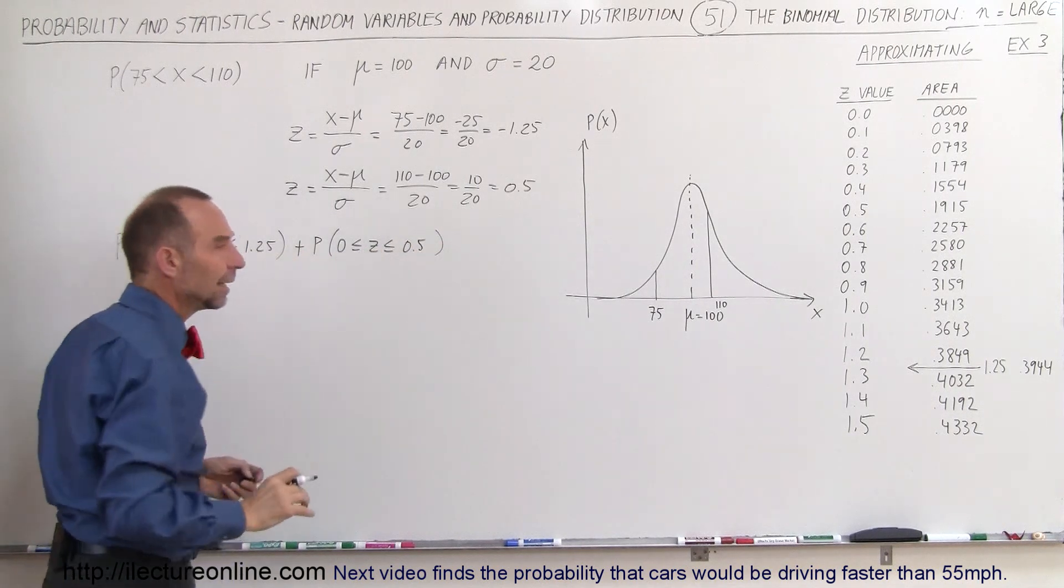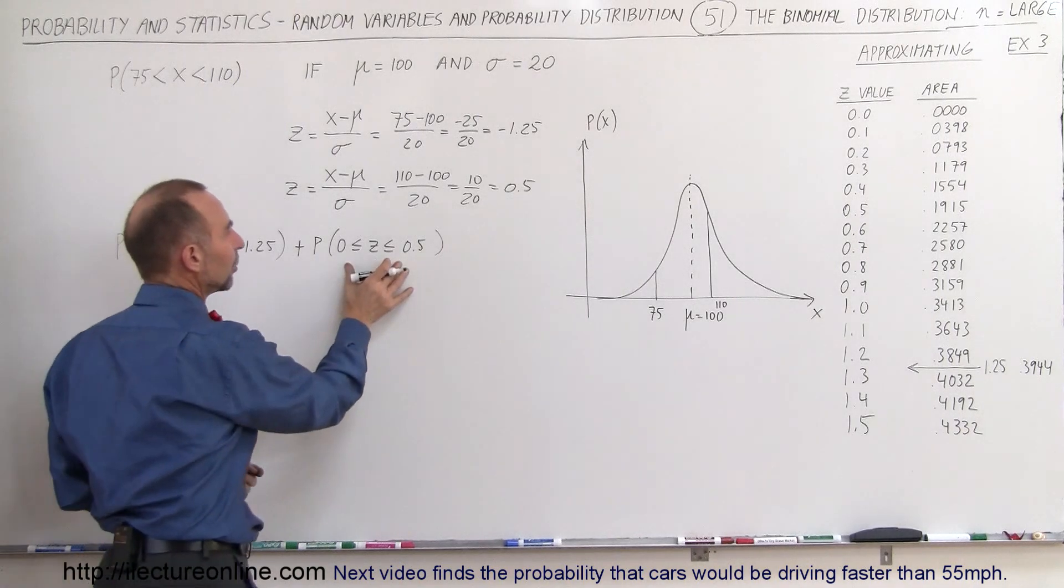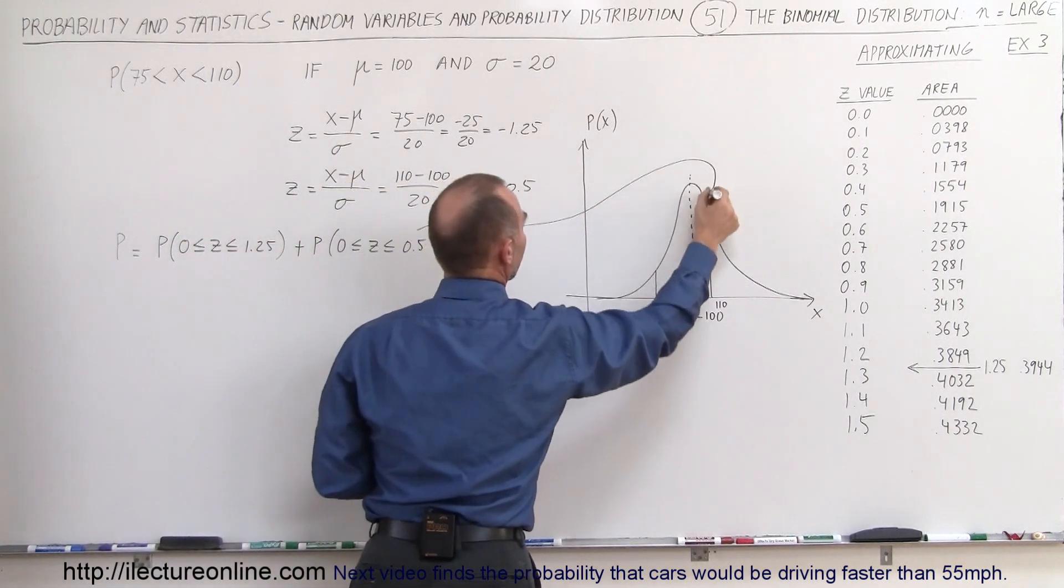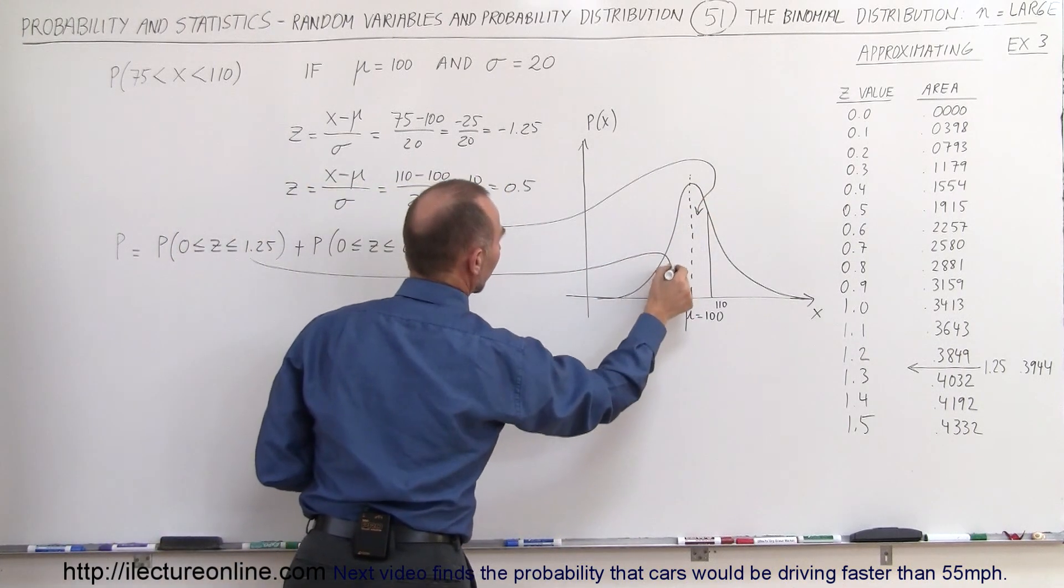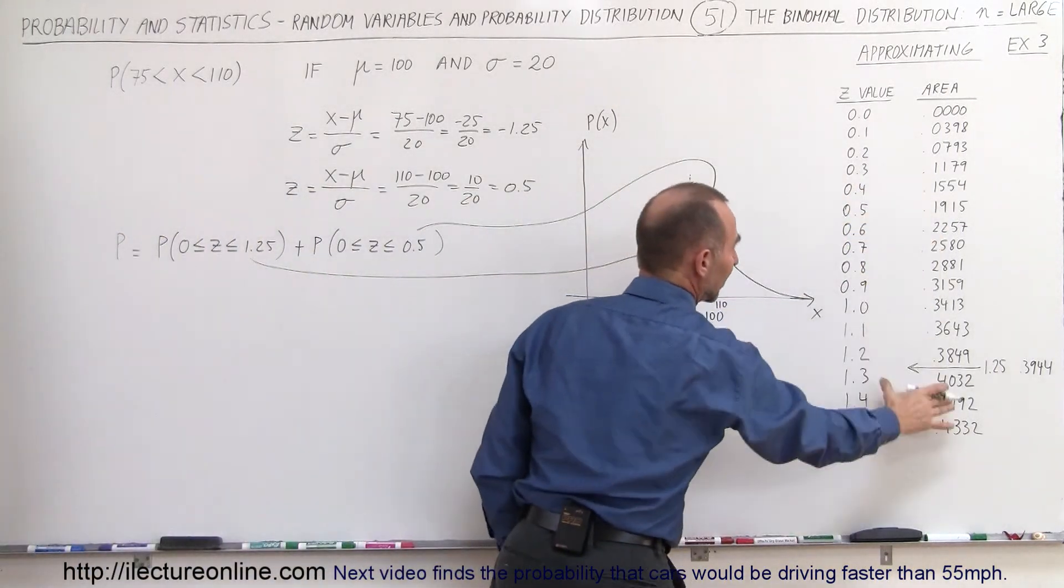Remember that z is simply a fraction of sigma. So this here will correspond to this area right here, and this value right here will correspond to this area right there. And we can read out what that area is by just looking at the table.